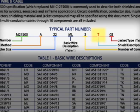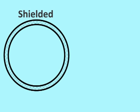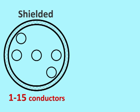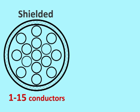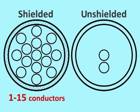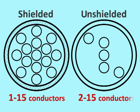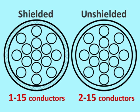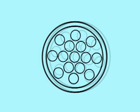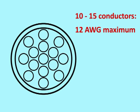The number of conductors is also found in the part number. Shielded cables can have from 1 to 15 conductors. Unshielded cables can have between 2 and 15 conductors. If a cable has 10 to 15 conductors, they may be no larger than 12-gauge.